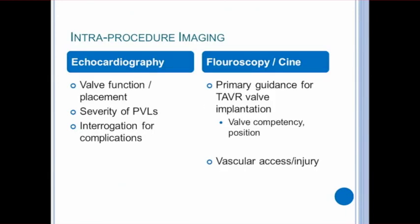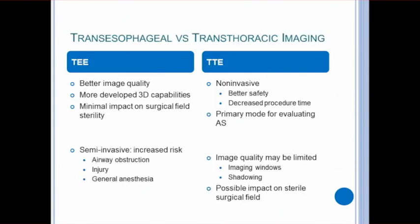Imaging during the procedure is mostly done with fluoroscopy. It's the primary guidance for valve implementation and it's used for assessing vascular access and injury. Echo is used in conjunction to evaluate function and placement, to interrogate the severity of any paravalvular leaks, and to assess any additional complications. When hospitals are new to TAVR, it is strongly recommended to use transesophageal imaging until the team has more experience with the procedure, and should still be used in patients receiving general anesthesia, high-risk patients, and those with poor imaging windows.